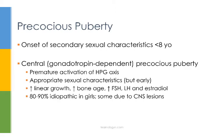Precocious puberty can be divided further into three categories: central, peripheral, and isolated.